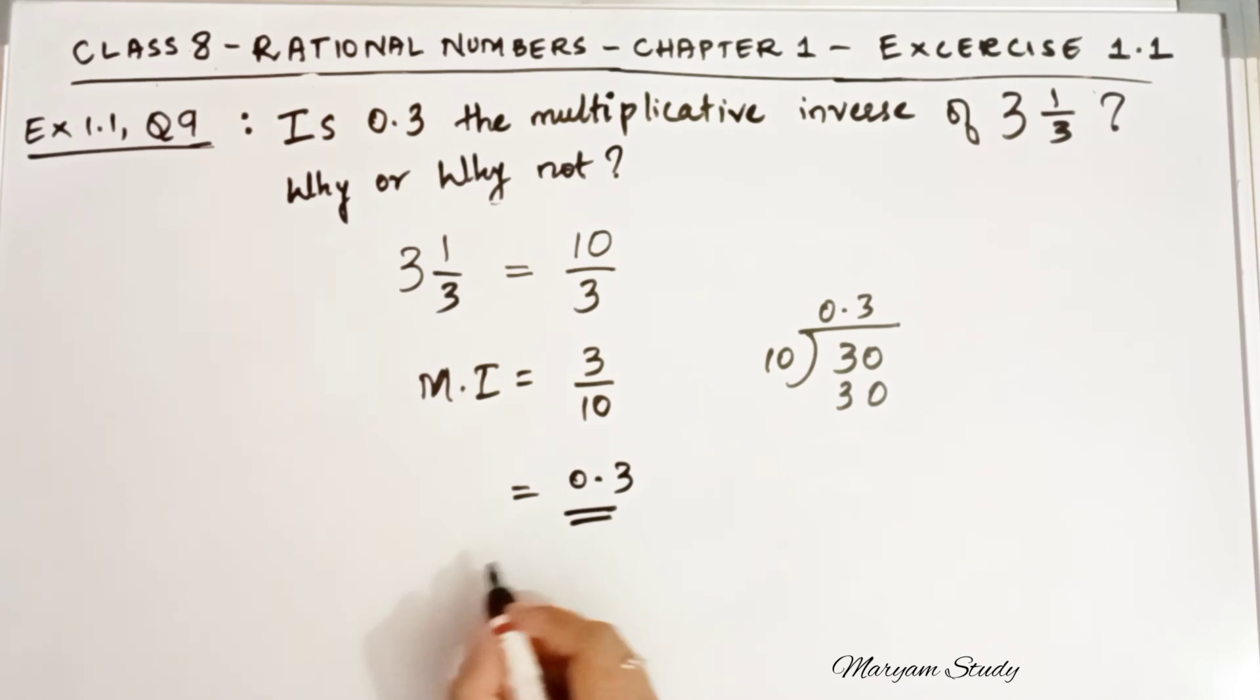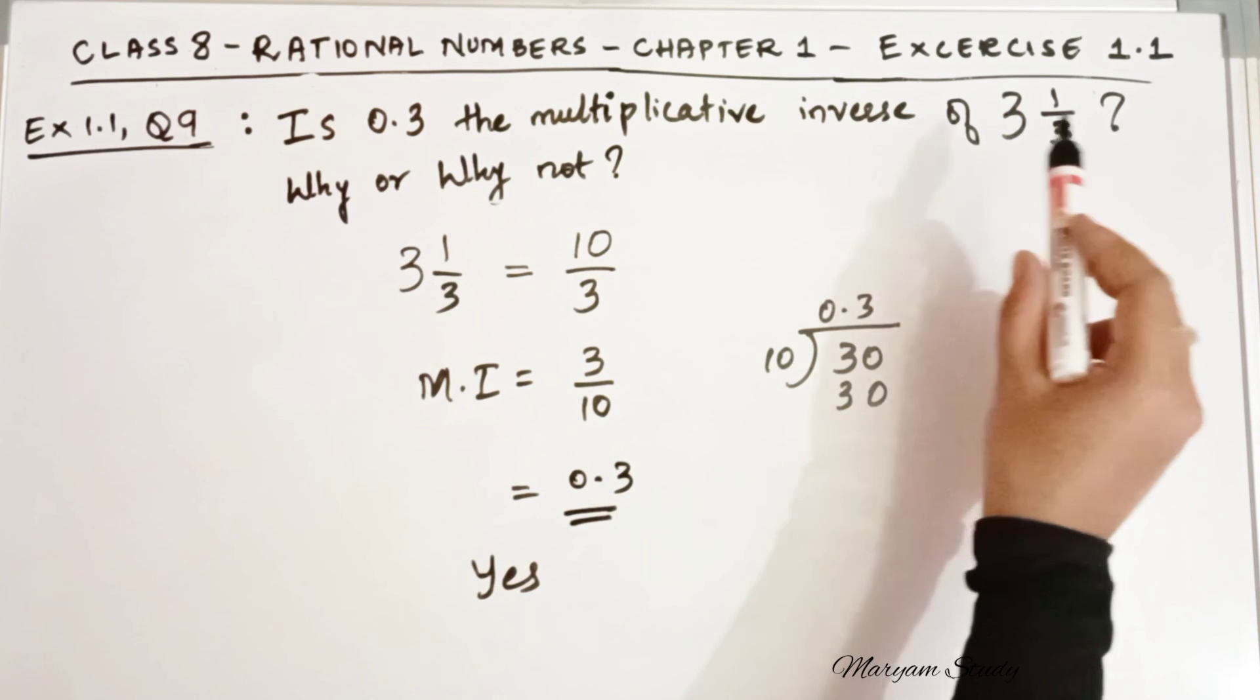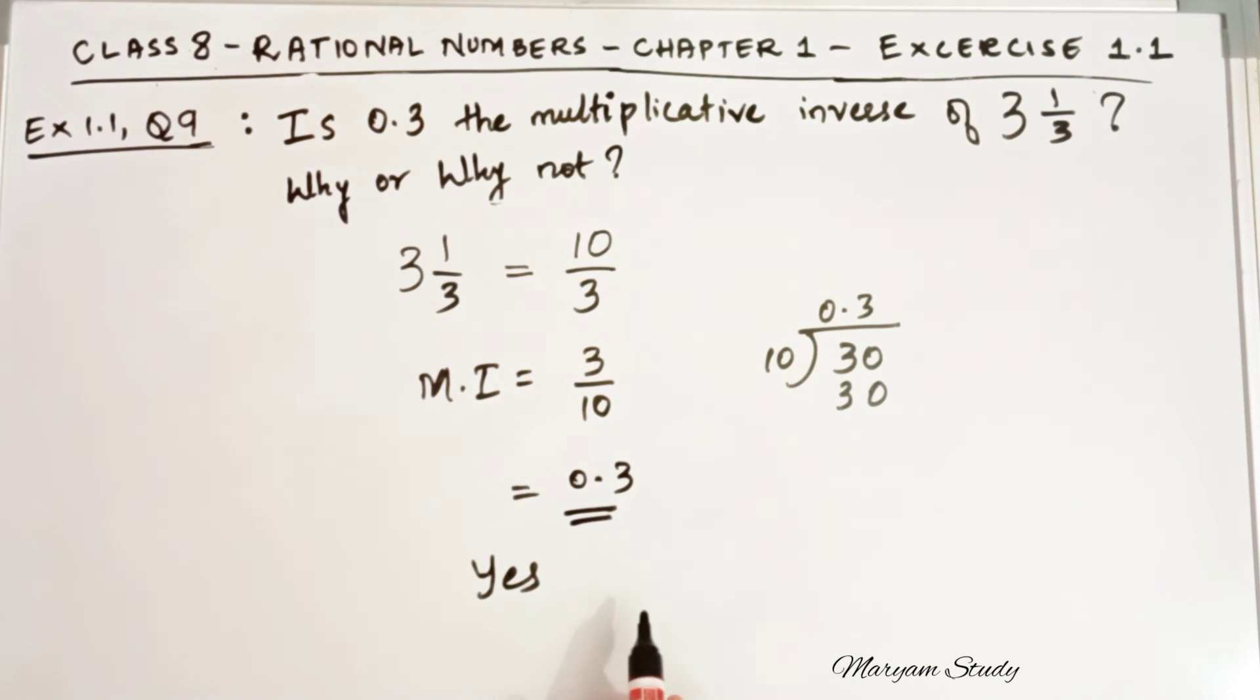So yes, 0.3 is the multiplicative inverse of number 3 by 1 by 3.